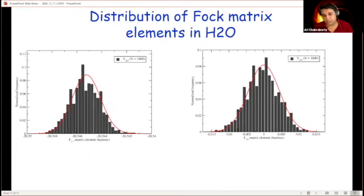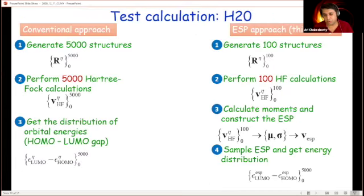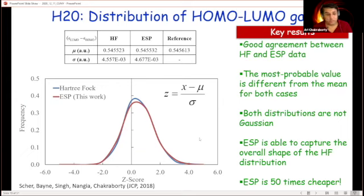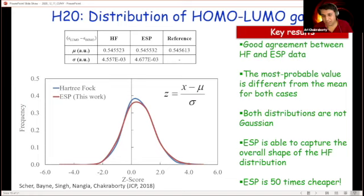The overall theoretical content is that you replace the ensemble average calculation you would have done for each individual quantum dot by a stochastic potential that captures the ensemble properties of those dots. The distribution for the HOMO-LUMO gap of water shows very good agreement between the direct method using 5,000 samples and the ESP method.